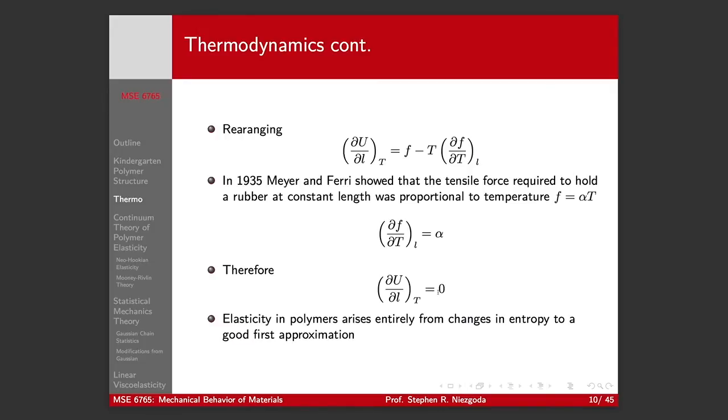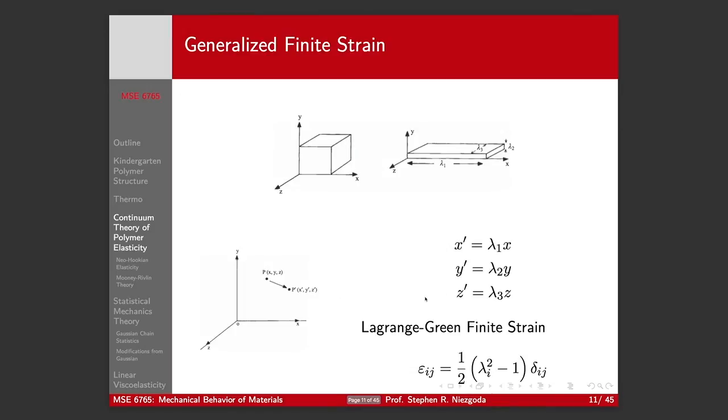So what this tells us is that as we deform, if we deform slowly so that we have no temperature change, if we deform quickly we're going to have a temperature change, but if we deform a rubber slowly enough that we have no temperature change, our internal energy remains constant. So the elasticity in polymers has to arise entirely due to changes in the entropy. And that's to a first approximation. So stop there, pick it back up with some continuum theories of polymer deformation.